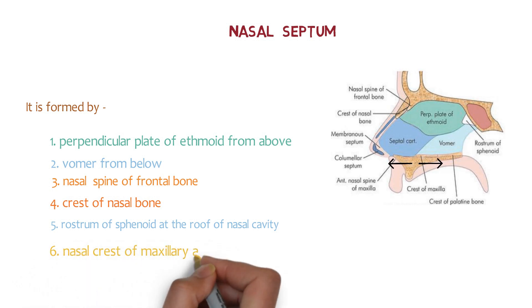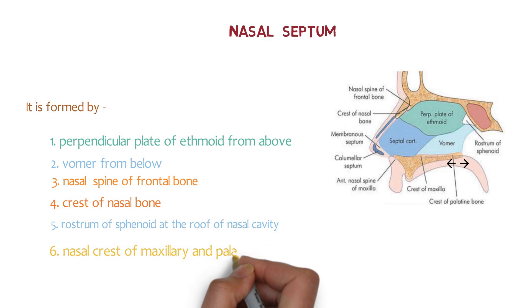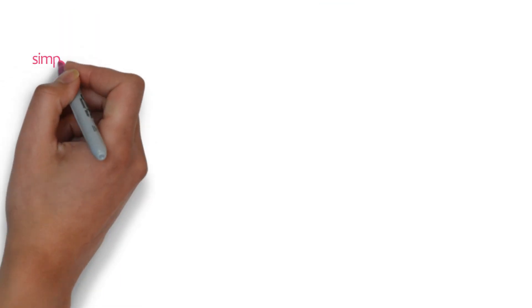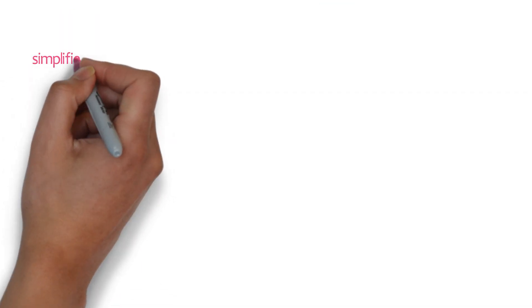Don't forget — below we have the crest of maxilla, and just posterior to it we have the crest of palatine bone. So all these structures together form the nasal septum. Now let's simplify it and make a simplified diagram.